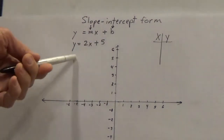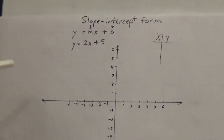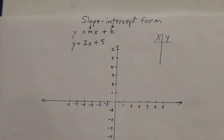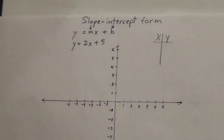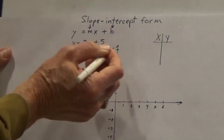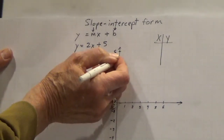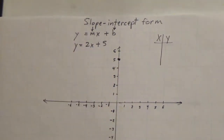I can actually graph the line y equals 2x plus 5 directly from the equation — I don't even have to get points. This is slope-intercept form: 2 is the slope, 5 is the y-intercept. So I put in the y-intercept first. The y-intercept is here — got 5.